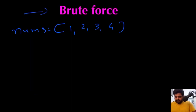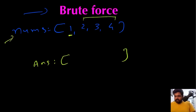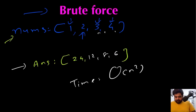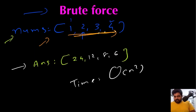The brute force way is to take any single value and iterate over all remaining values to compute the product and place it in the answer array. For the first element we get 24, for the second 12, and so on. This works but time complexity is O(n²), and we are explicitly told to solve this in O(n) time. We need a better approach.